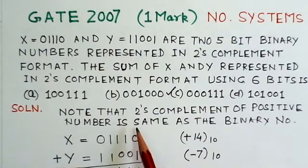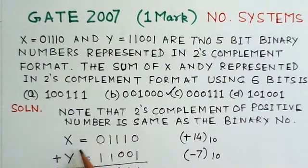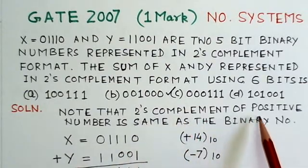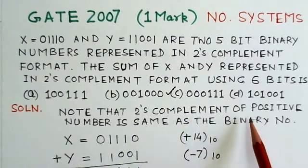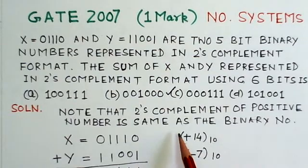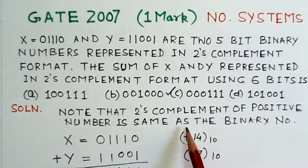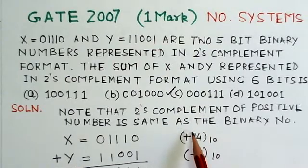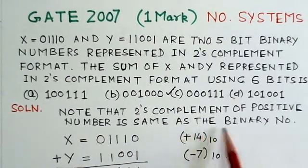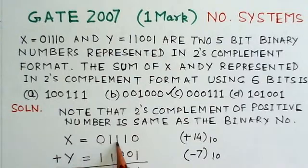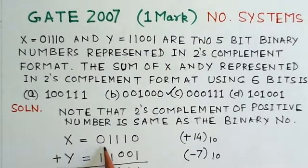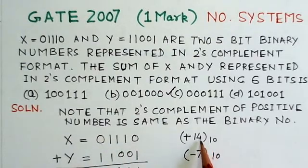From the problem, there is a number X and a number Y, and these numbers are in 2's complement format. We should note that the 2's complement of a positive number is the same as the binary equivalent. So if there is a positive number and you have to find the 2's complement, it will be the same as the binary. Here X is 01110. This is the MSB indicating the sign. 0 MSB shows it is a positive sign, meaning the number is positive. It is plus 14.